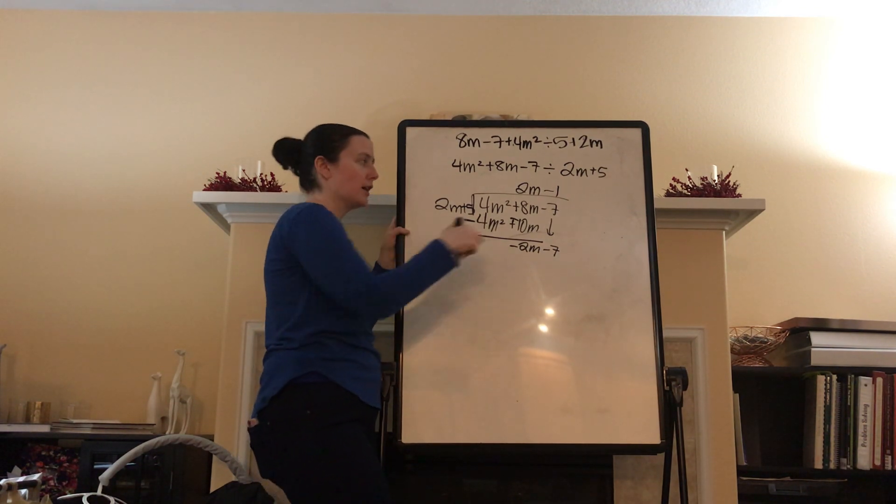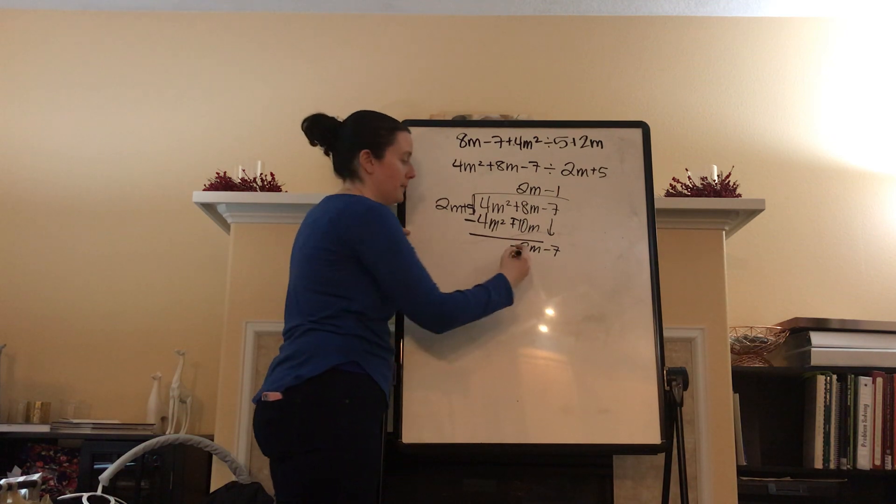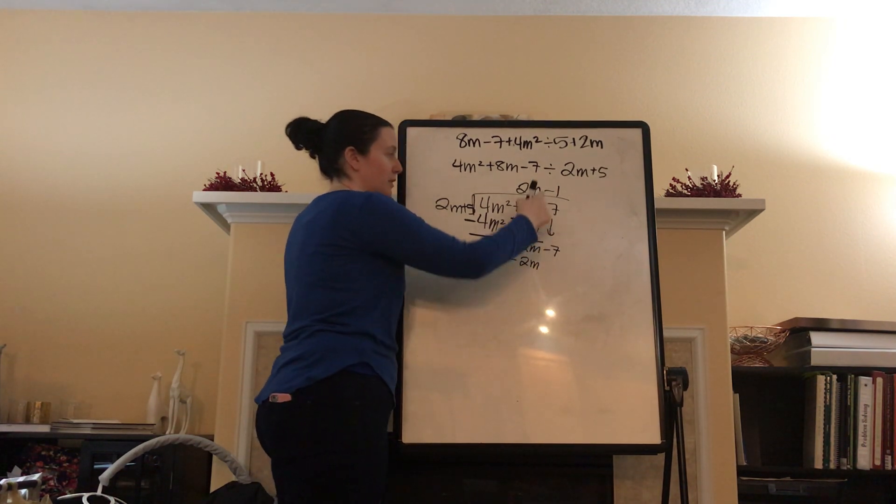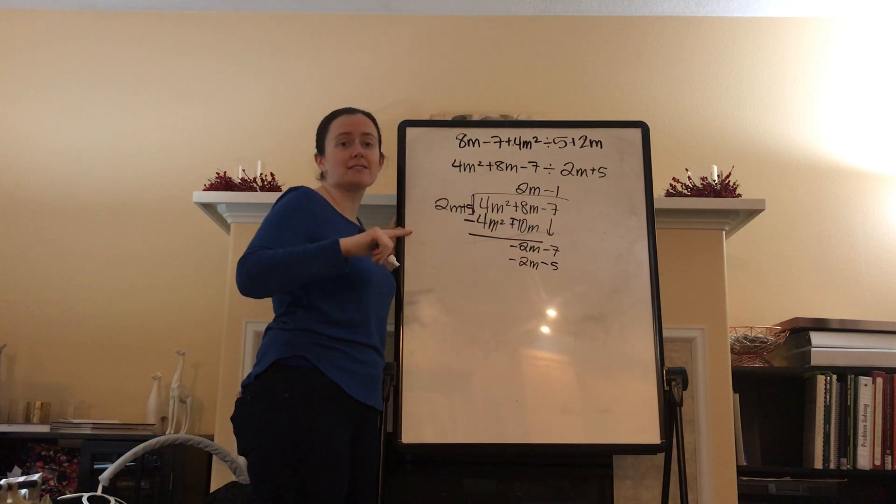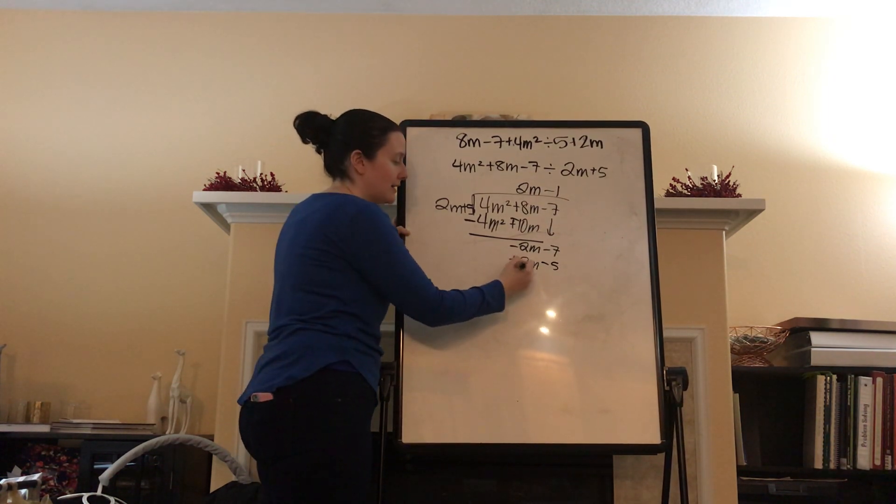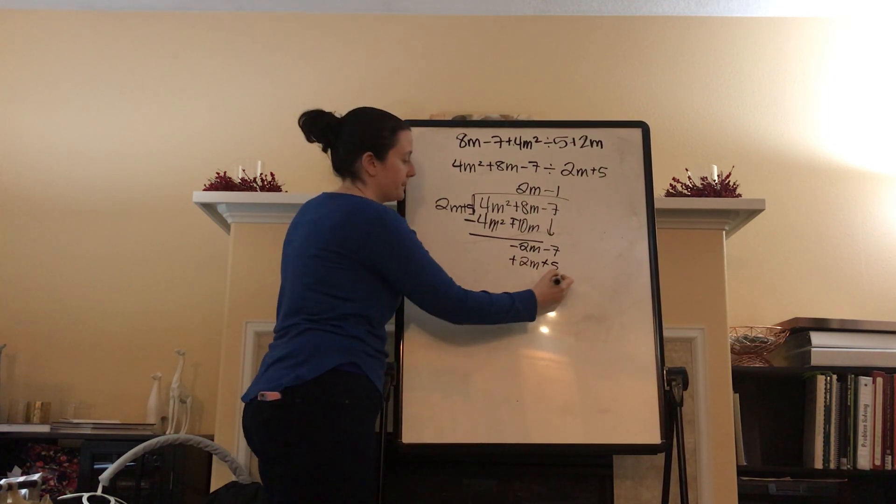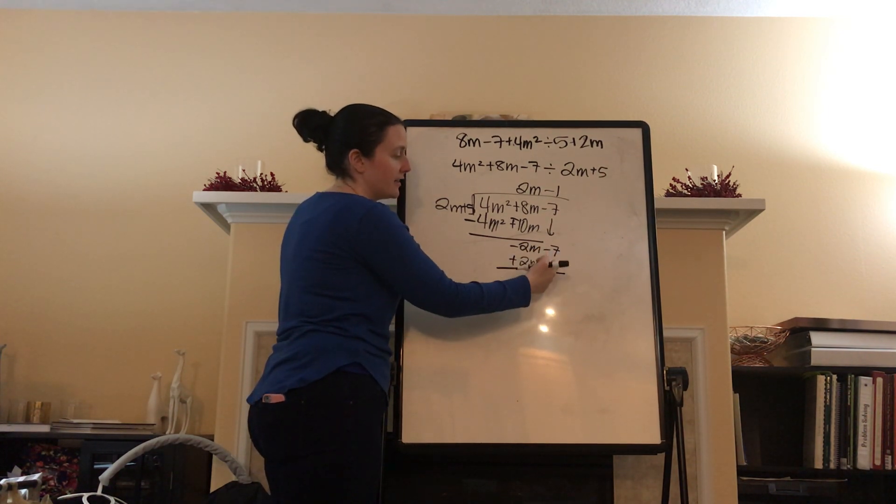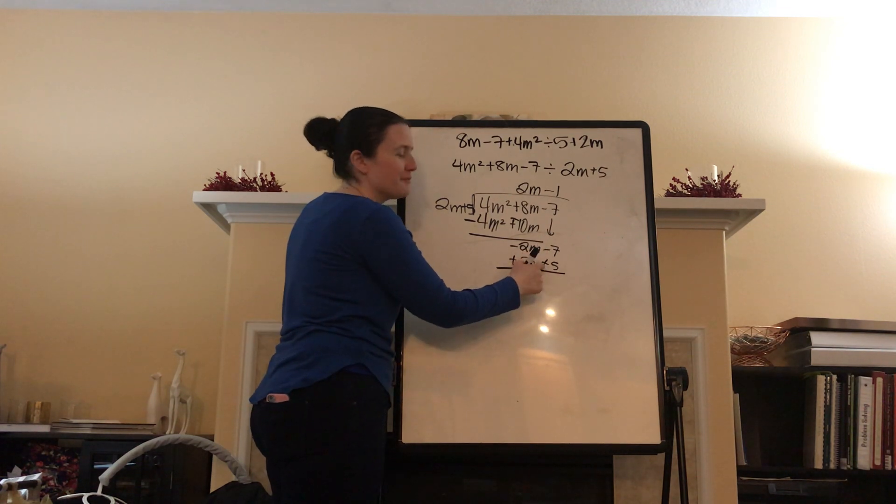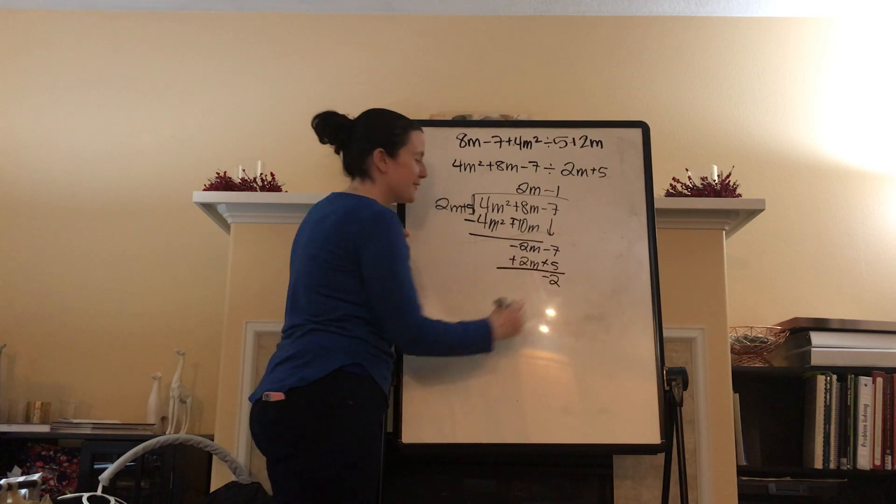So far so good, right? So, divide. Check. Multiply. Negative 1 times 2m. Negative 2m. Negative 1 times 5 is negative 5. Time to subtract. So, I need to change all my signs. Now, it's going to be plus and plus. Do the actual subtraction. Negative 2m plus 2m. No m's. Negative 5. Whoa. Negative 7 plus 5 is negative 2.